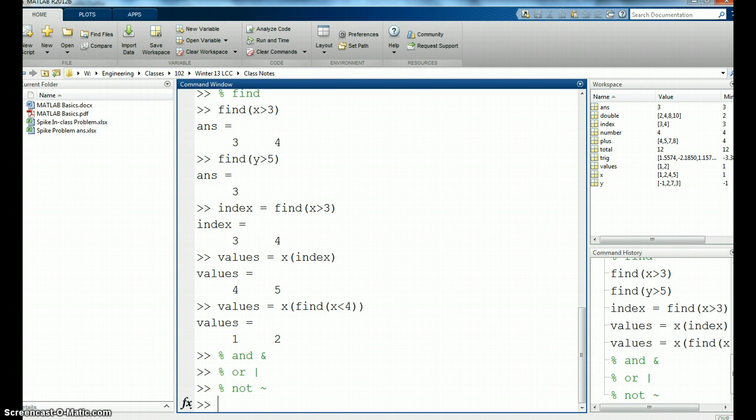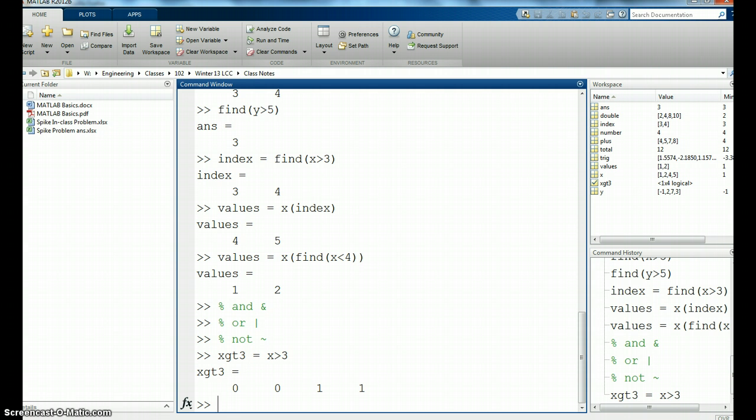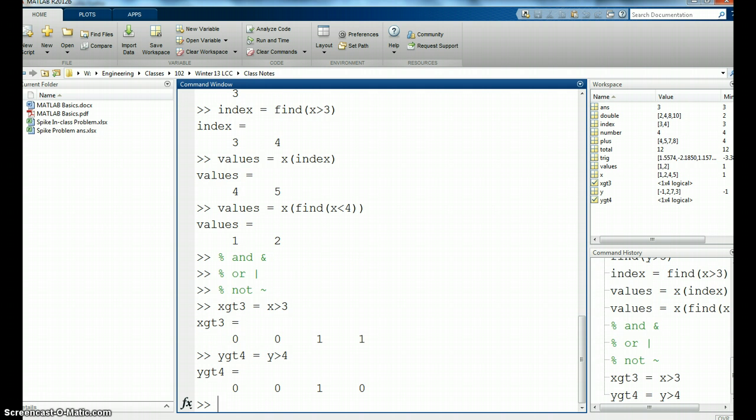So let's say something like, we can combine some of these. We can say x greater than 3. So there's a vector. And then we'll say y greater than 4. Is y greater than 4? And I get that.